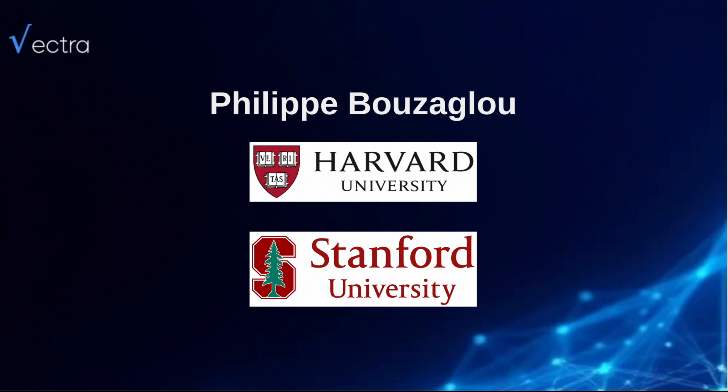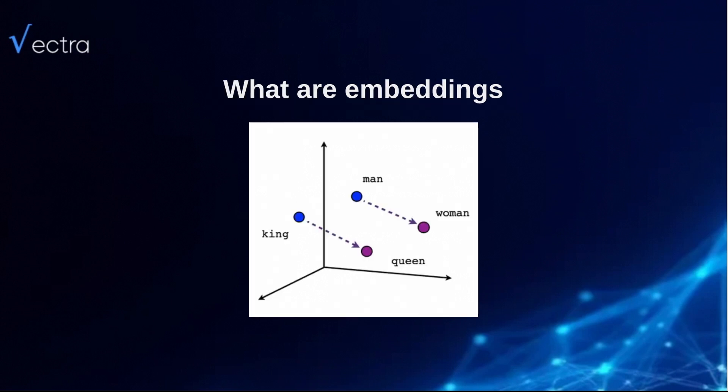Many of you already know what embeddings are, but just a quick one or two-minute overview for the ones who need to be brought up to speed. Embeddings are a representation in vector space — in this case, products. You use n dimensions; in our case, it's 512 or 768. And we train our model to have a representation for every possible word and every possible product.